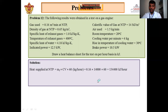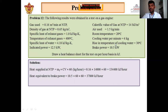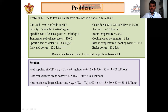Heat equivalent to brake power: brake power is given as 10.5 kW, which is 10.5 kJ/s. To convert from kJ/s to kJ/hour, we multiply by 3600 (i.e., ×60 for minutes, then ×60 for hours). So: 10.5 × 60 × 60 = 37,800 kJ/hour. This is the heat equivalent to brake power.